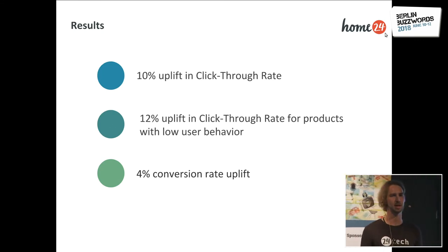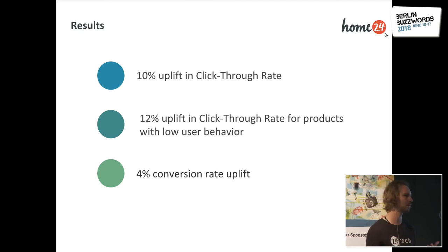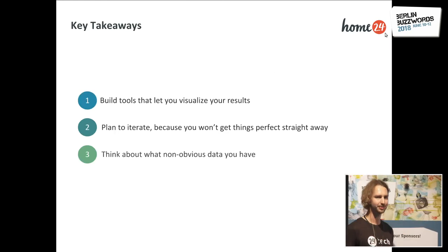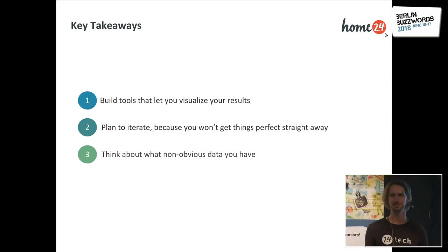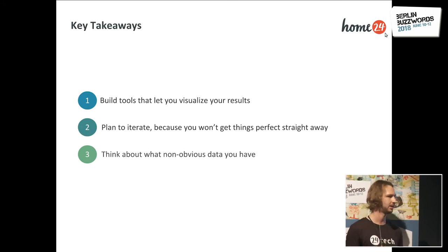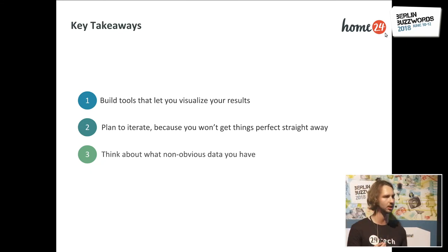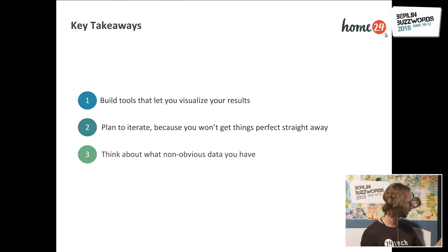The results we saw after implementing this and mixing it into our ensemble of algorithms: a 10% uplift in click-through rate, a 12% uplift in click-through rate for products with low user behavior — the ones we were especially targeting because we have to rely on content-based recommendations — and finally an overall 4% conversion rate uplift. The key takeaways: first, take the time to build visualization tools to see what your intermediate results and algorithms are actually producing. Second, plan to iterate, and think about what non-obvious data you have that you could use to add to your existing model — using product images wasn't one of our first ideas, but when we visualized the results and saw the gaps in our algorithms, that's when we got the idea to use this data.